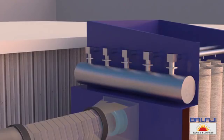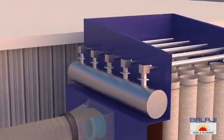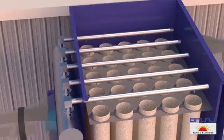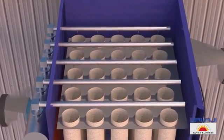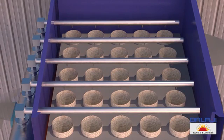Air stored in the header is released, which is carried by the blow pipes. This high-pressure air is then released in the filter bags one row at a time. This air passing through the filter bags releases the deposited dust.